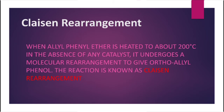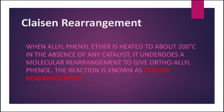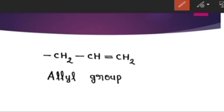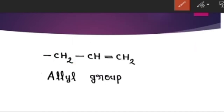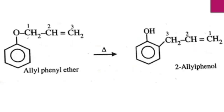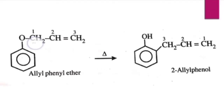First of all, you want to know about the allyl group — this is the allyl group, and this is the allylic position, that is the sp3 hybridized carbon next to which there is a carbon-carbon double bond. This reaction is one of the examples of Claisen rearrangement — that is, allyl phenyl ether is converted to 2-allyl phenol.